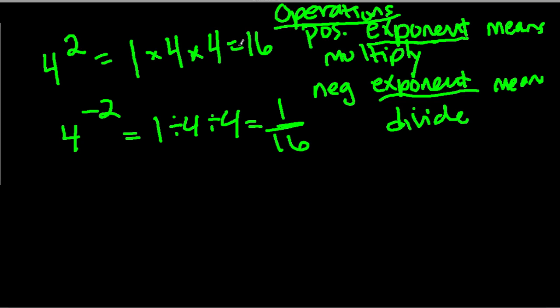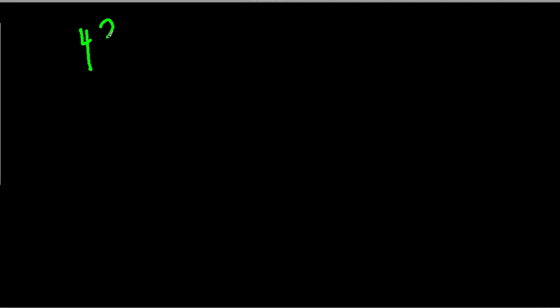Okay, so 4 to the second power is 16. 4 to the negative second is 1 over 16. Let's hold these in our heads. And we'll look at, again, patterns. So 4 to the third, all the way down to 4 to the negative third.